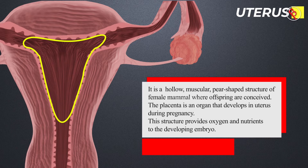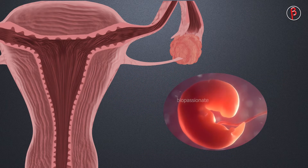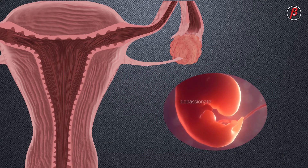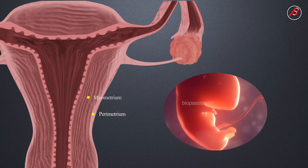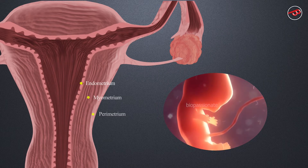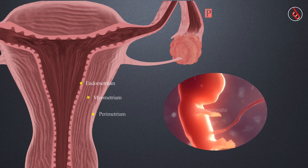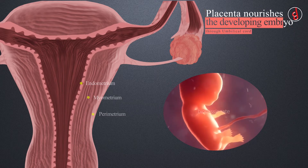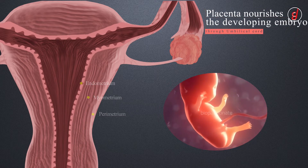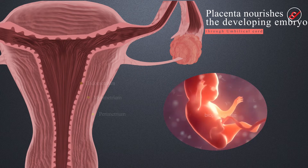At the time of pregnancy, an organ called the placenta develops in the uterus, which provides oxygen and nutrients to the developing embryo. The uterus has a highly vascular wall composed of three layers of tissue called the outer perimetrium, middle myometrium, and inner endometrium. The uterus is the place where the baby is conceived.